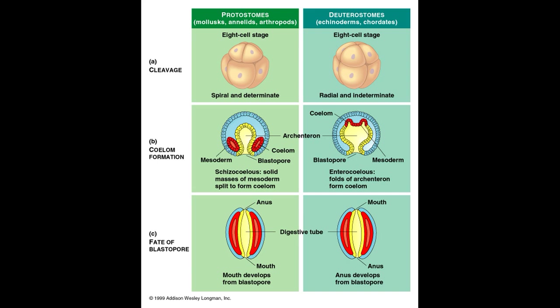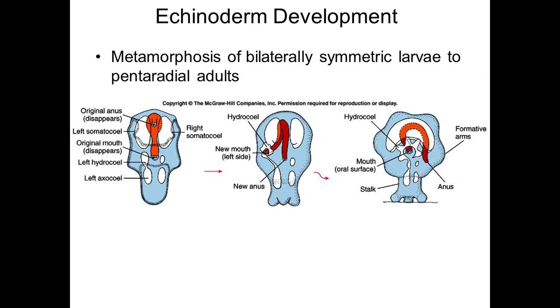Indeed, we share enterocoelous development with starfish and acorn worms, which must be very strange if we're not related to them at all. Furthermore, we are well within the bilaterians — i.e., animals with bilateral symmetry — but starfish as well as other echinoderms seem to be the odd one out in that they are radially symmetrical. However, echinoderms still retain their bilaterian heritage in their ontogeny, as their larvae are bilaterally symmetrical. Once again, very strange if they are not related to bilaterians.